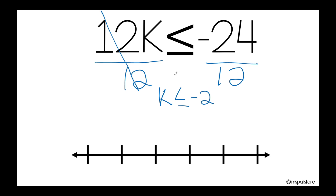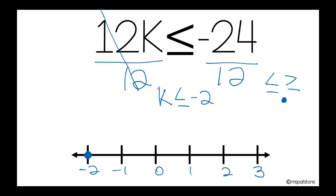So negative 24 divided by 12 equals negative 2. Now I'm ready to graph my solution. This is going to be negative 2, negative 1, 0, positive 1, positive 2, and positive 3. Remember that when I have less than or equal or greater than or equal, I need to use a closed circle. So now I have my closed circle at negative 2. The solution is telling me that my variable could be any number less than or equal to negative 2. Remember that on the negative side, as they move away from 0, they become smaller and smaller. So my arrow will be pointing towards this direction.